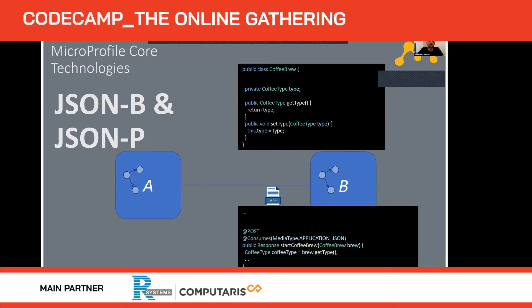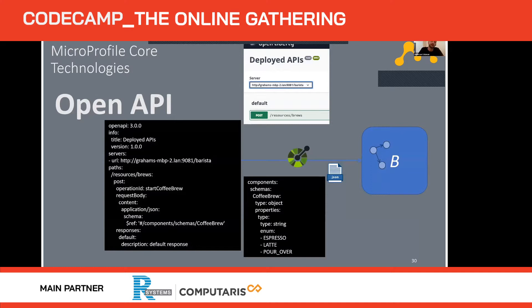JSON-P is a parser that allows you to parse JSON and get specific information out. OpenAPI is based on Swagger — it lets you document your APIs and, if you enable this feature in Open Liberty, gives you a nice GUI to test your individual endpoints. With microservices having lots of different endpoints and different teams, it can get confusing to figure out what an endpoint does, so this allows you to document it, test it, see response codes — really good for managing across many teams.